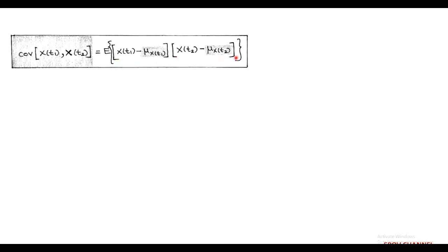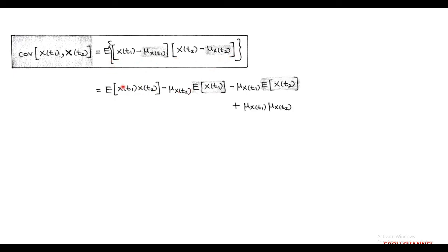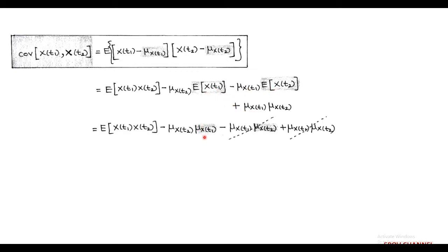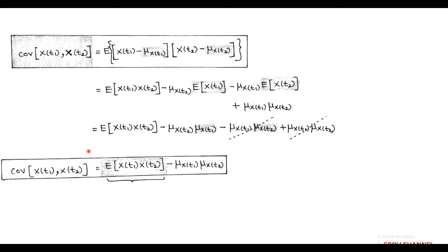Opening the inner bracket and after rearrangement, we get: expectation of X(t1) into X(t2), minus mu_X(t2) times expectation of X(t1), minus mu_X(t1) times expectation of X(t2), plus mu_X(t1) into mu_X(t2). Since expectation of X(t1) equals mu_X(t1) and expectation of X(t2) equals mu_X(t2), the two middle terms cancel, giving covariance of X(t1), X(t2) equals expectation of X(t1) into X(t2) minus mu_X(t1) times mu_X(t2).